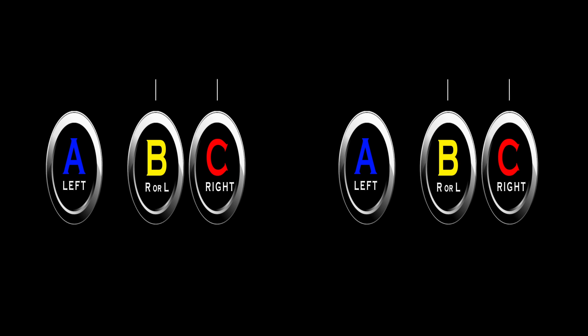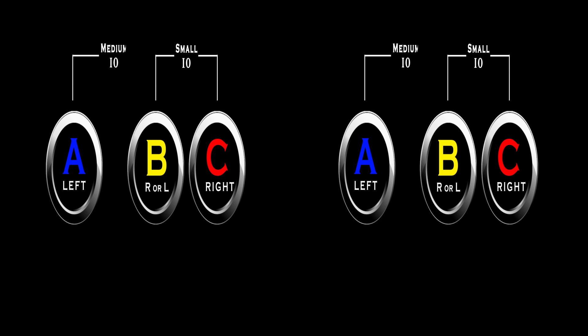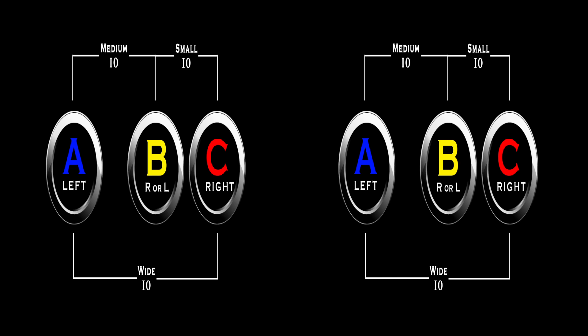The distance between the B and the C is small. The distance between the A and the B is medium. The distance between the A and the C is wide. We're shooting all three, or more, at the same time.